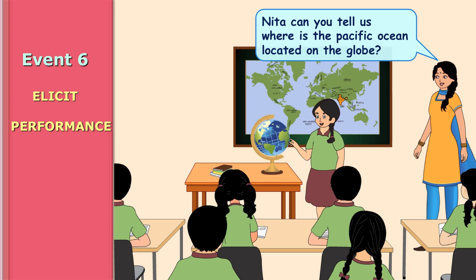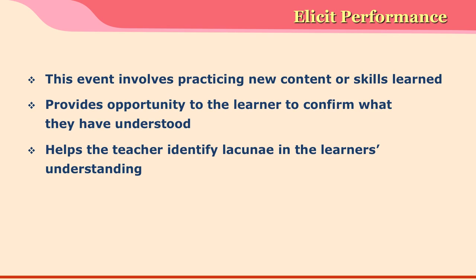The sixth event is elicit performance. As the name suggests, it gives an opportunity to the learner to perform — they get a chance to practice what they have learned. This event helps a learner exhibit and confirm what they have learned and understood. It also gives the teacher an opportunity to identify any lacunae in the learner's understanding, which can then be corrected at the right time.